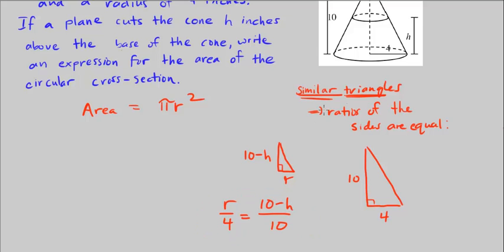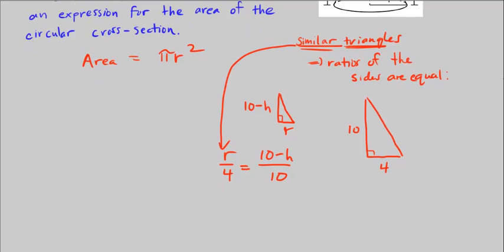So this is what similar triangles allows us to do. The ratio of one side to the corresponding other side, the base of this triangle divided by the base of this triangle, is equal to the height of this triangle divided by the height of this triangle.